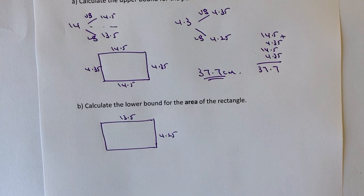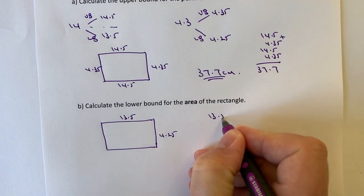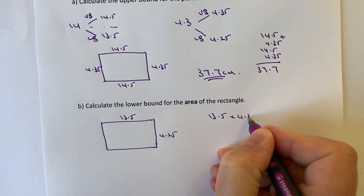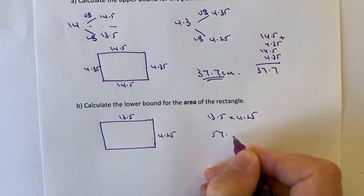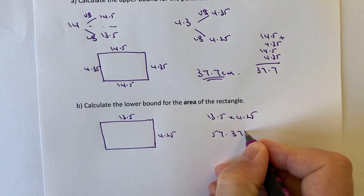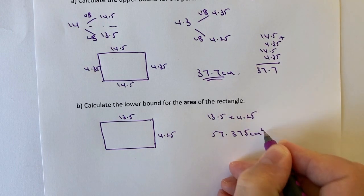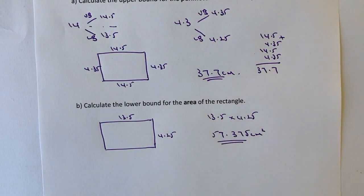So if I want to work out the lower bound for the area, if I multiply those two numbers together, I get 13.5 times 4.25. And you can either calculate that or use a calculator or something. But you should get an answer of 57.375 centimetres squared. And that would be the answer to part B of this question.